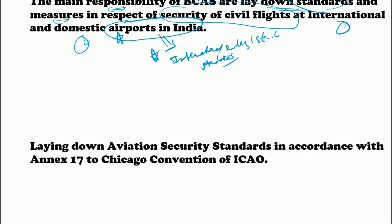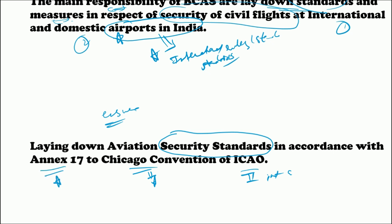These standards are defined by ICAO — the International Civil Aviation Organization — which was formed because of the Chicago Convention. All the security standards that BCAS follows are in accordance with Annex 17. These are key terms: security standards, Annex 17, and the Chicago Convention of ICAO.